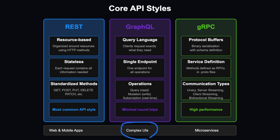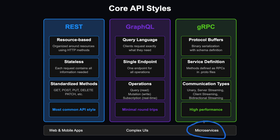GraphQL is the recommended option for complex UIs where a single page may need different or deeply nested data. gRPC is the least common of the three — it is a high-performance RPC framework using protocol buffers for communication. Methods are defined as RPCs in proto files, and it supports streaming and bidirectional communication. It excels in microservices and internal system communication, being more efficient between servers than REST or GraphQL.